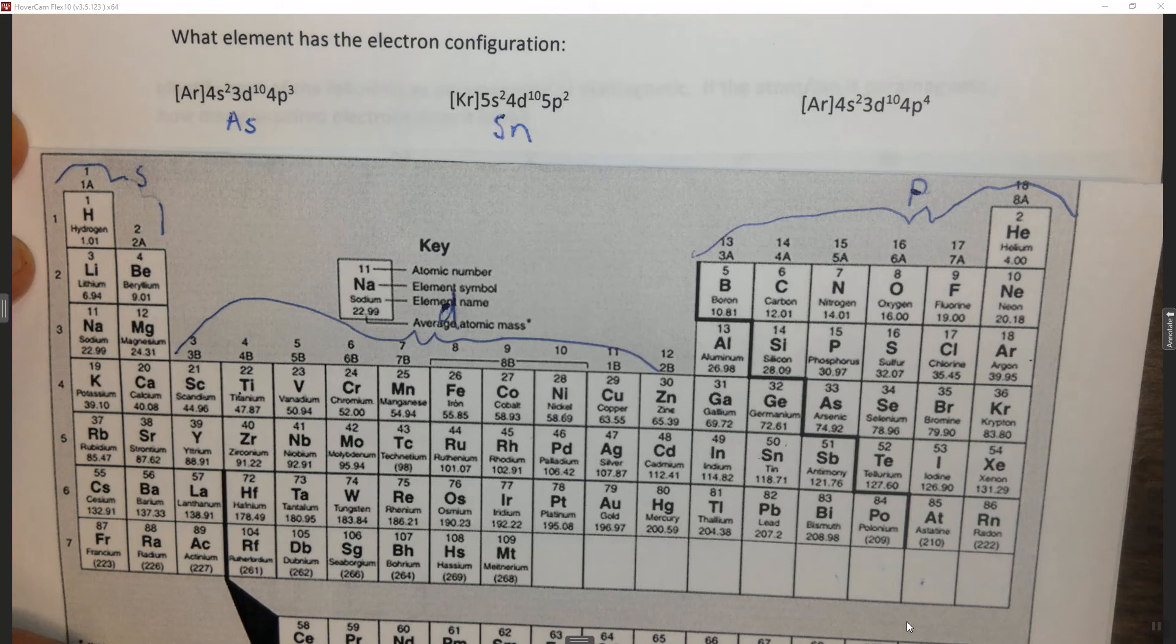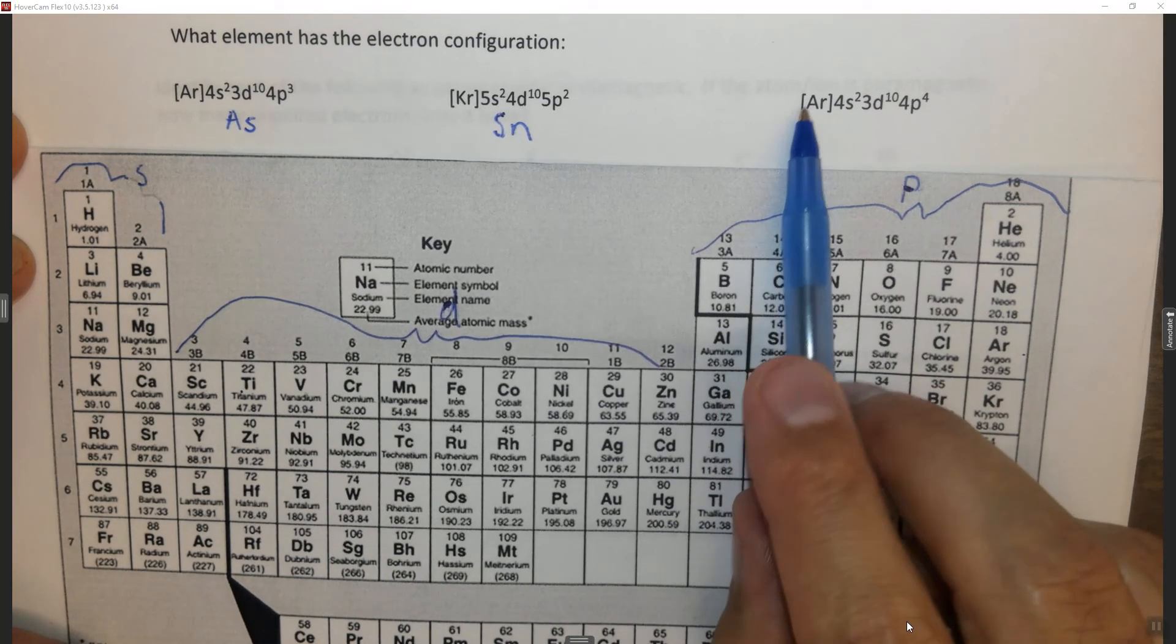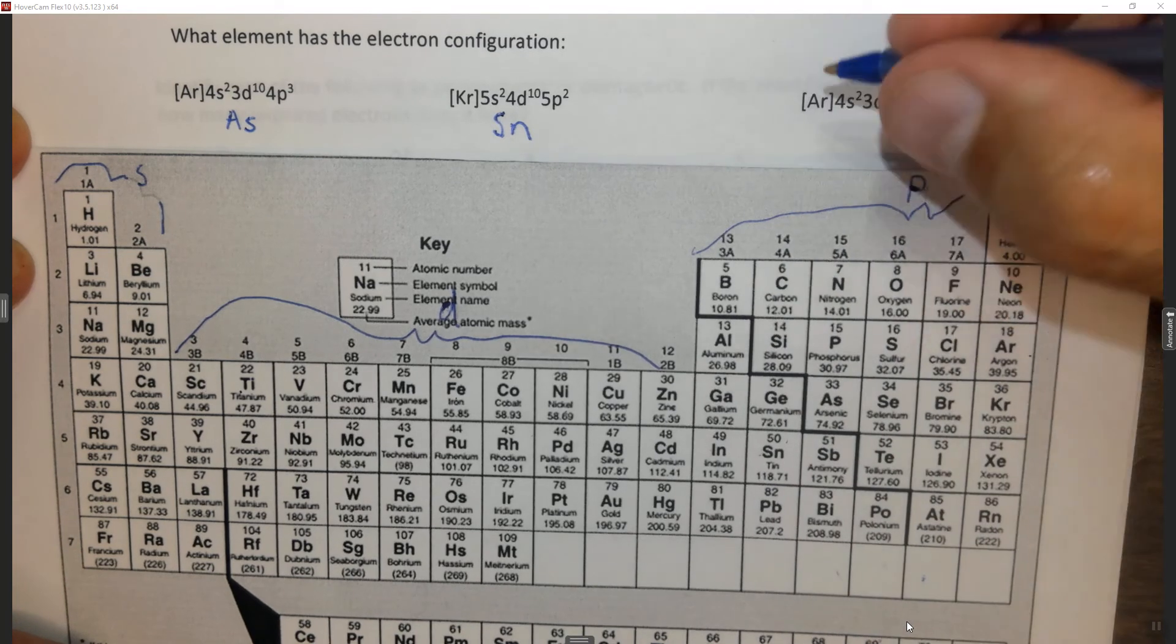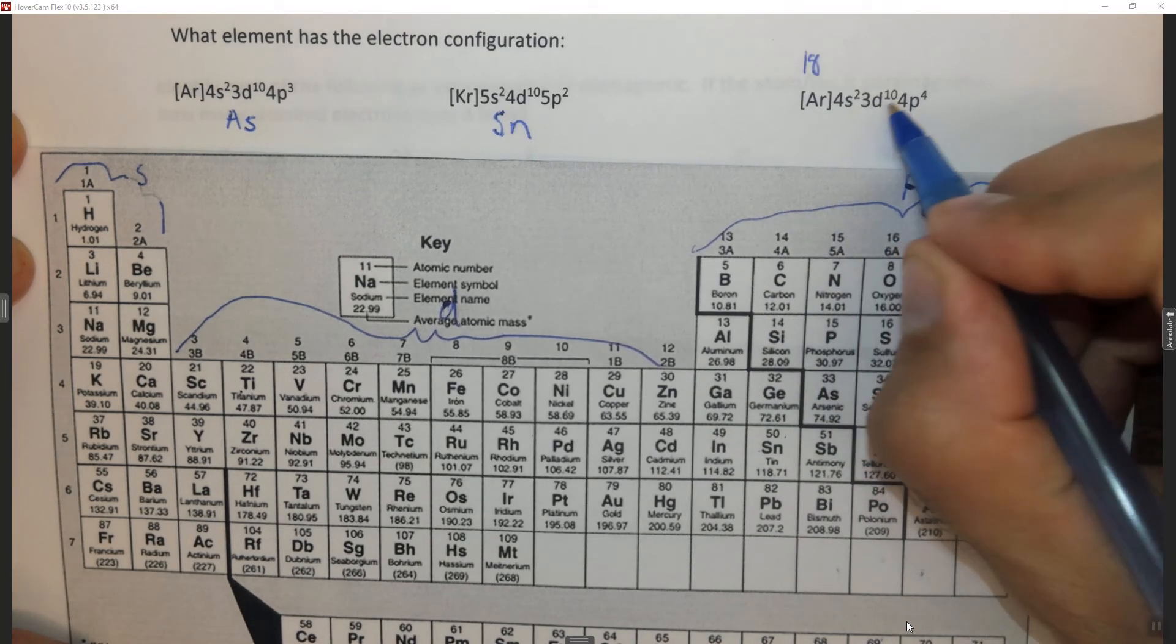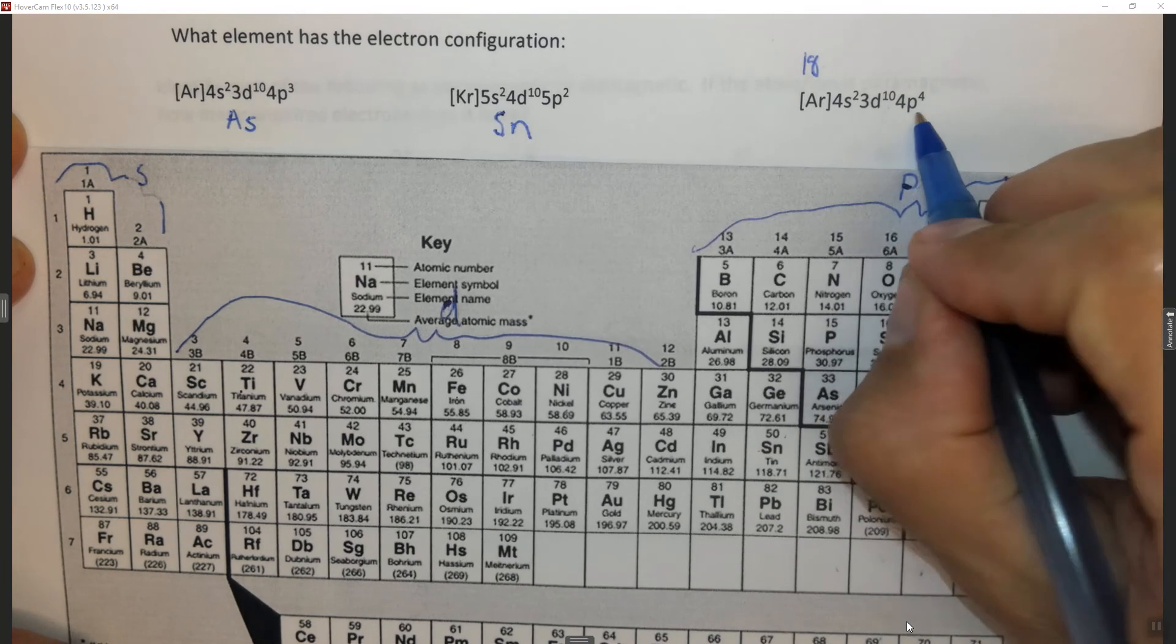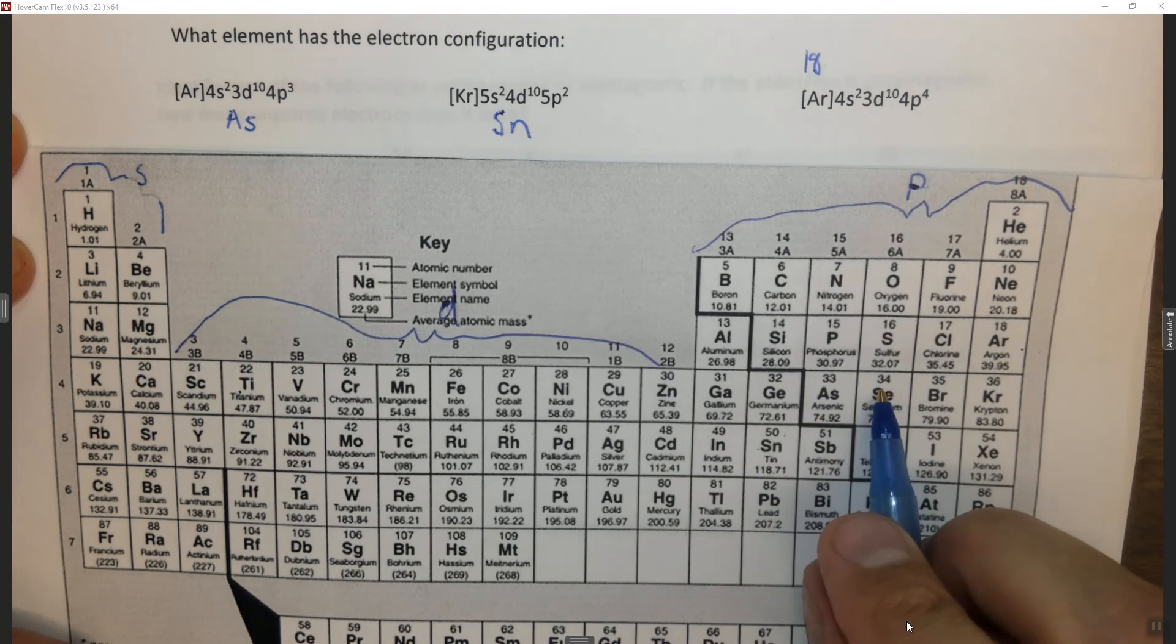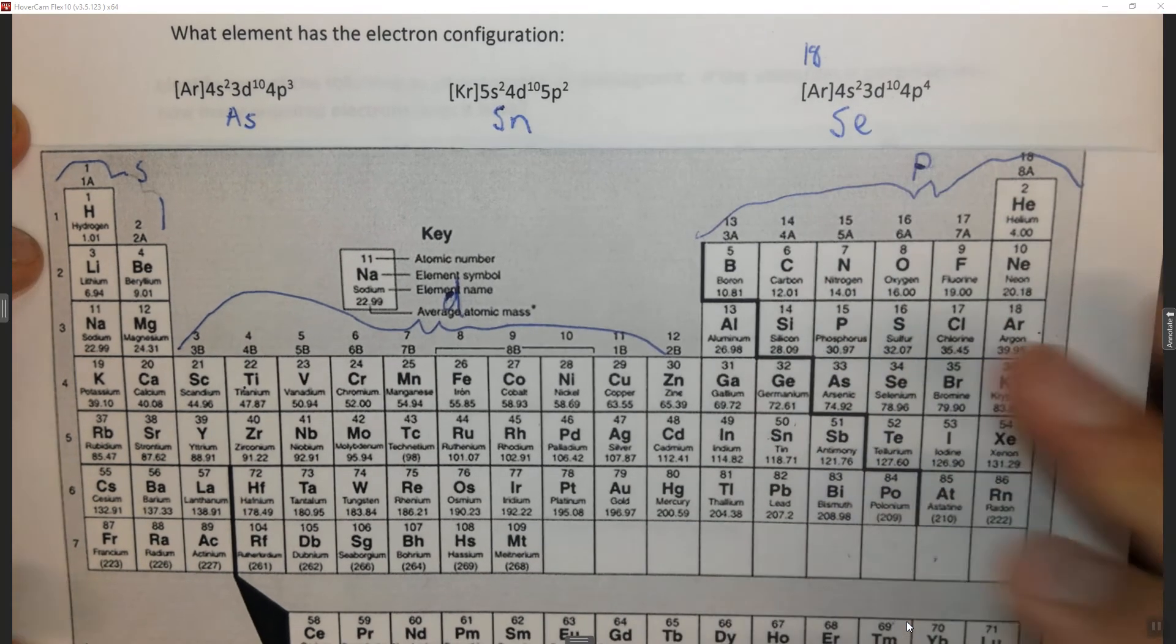The last way you could do this, there are probably others, is you could simply count 18 electrons from argon. How do I know that? I just look at argon and it has 18. Alright, plus 2 is 20, plus 10 is 30, plus 4 is 34. Simply find element number 34, and you find that it is selenium.